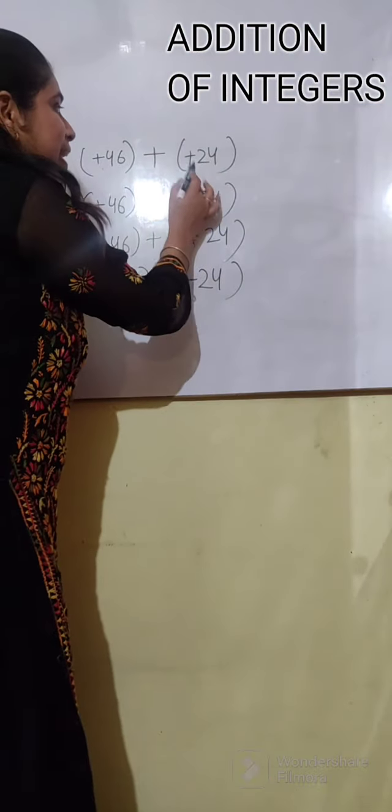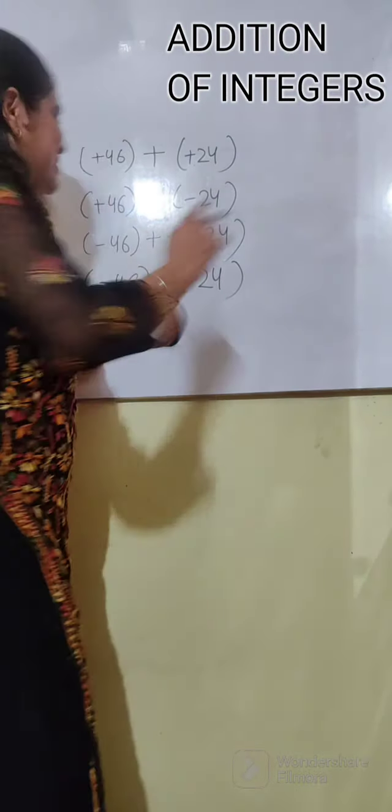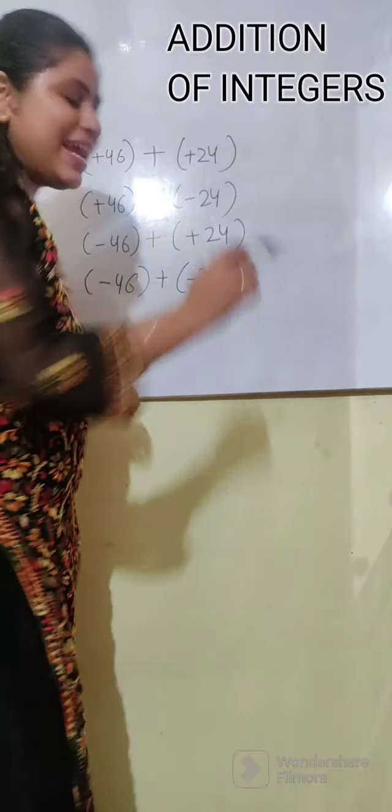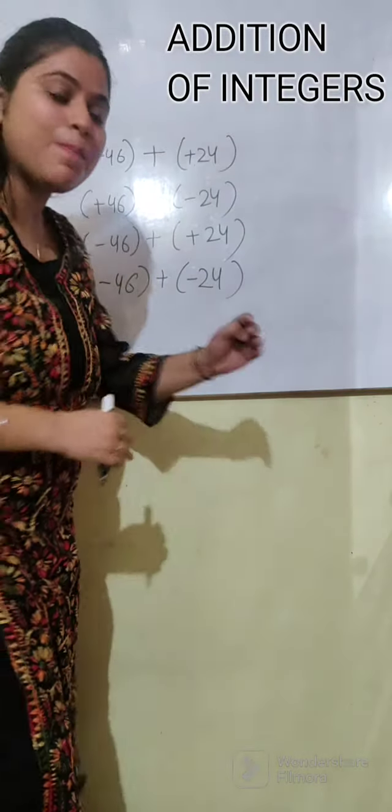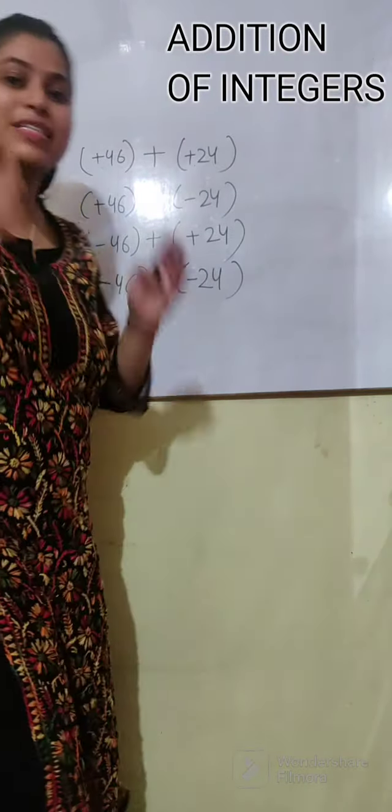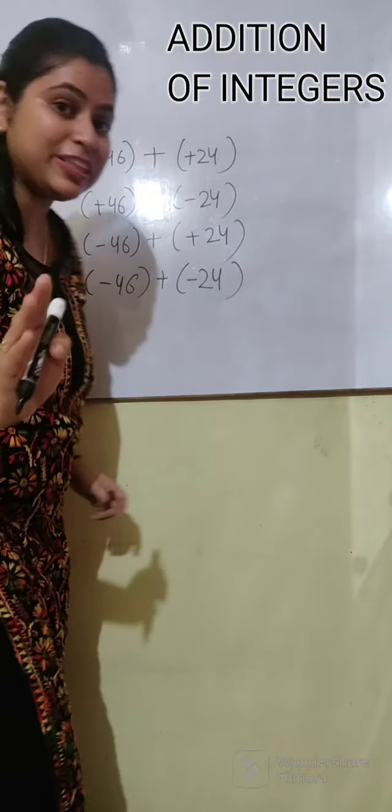So, we know that plus multiply by plus equals plus. Plus multiply by minus equals minus. Minus multiply by plus equals minus. And minus multiply by minus equals plus. Yes, if you know this, then do it again.